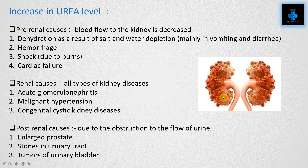Now let's see the increase in urea level. There are three major causes: pre-renal causes, renal causes, and post-renal causes. Pre-renal causes are due to decreased blood flow to the kidney. This may be caused by dehydration as a result of salt and water depletion, mainly in vomiting and diarrhea, also hemorrhage, shock due to burns, and cardiac failure.